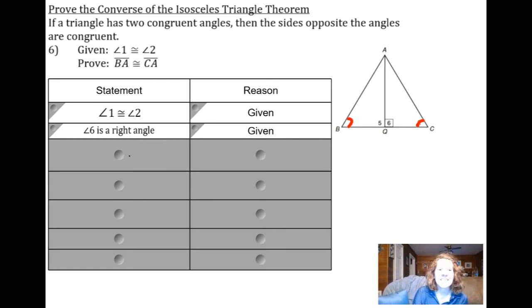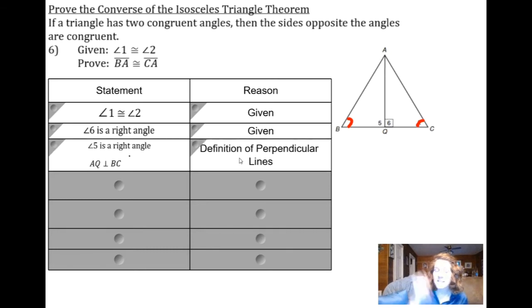You could use supplementary angles and linear pair postulate, or you could just say it's the definition of perpendicular lines. The definition of a perpendicular line is a line that intersects at 90 degrees and makes both of your angles 90 degrees. So if I know that one of them is 90, then that must mean this is a perpendicular line, which must mean that this is also a right angle.